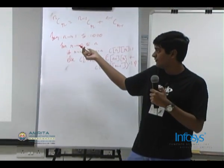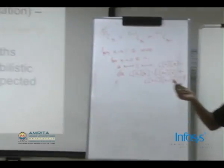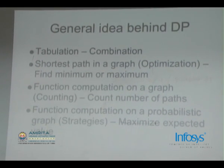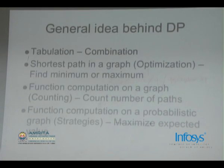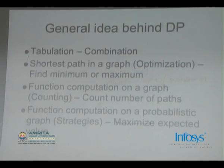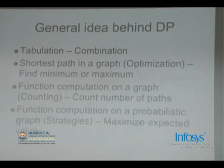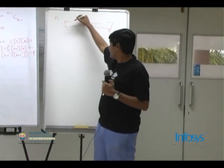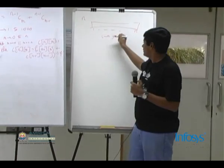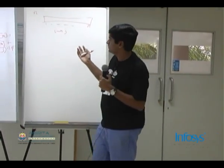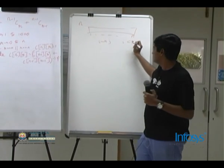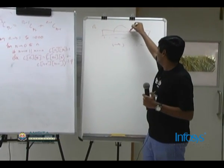The next category is function computation on a graph. This deals with counting the number of paths and similar things. Consider an array of n elements from 1 to n, with weighted directed edges from index i to index j, where you can always assume i is less than j. You are given many edges of this form, each connecting pairs of vertices.